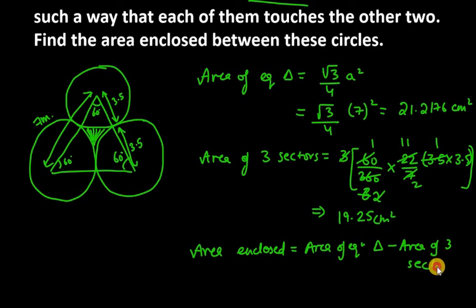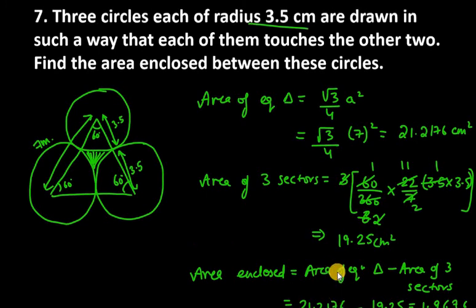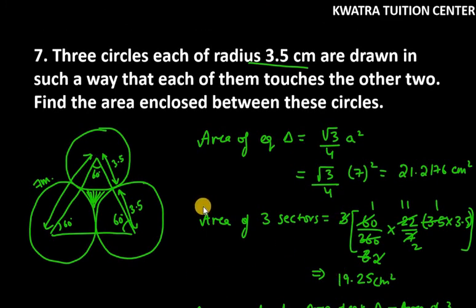The area of the equilateral triangle is 21.2176 cm², and the area of three sectors is 19.25 cm². Subtracting these, you get 1.9676 cm². This is the answer for question number seven.